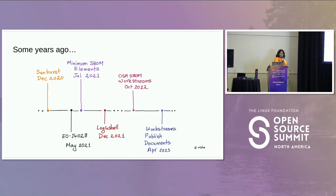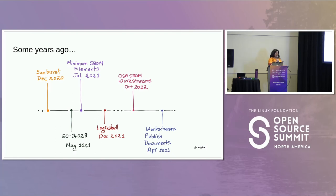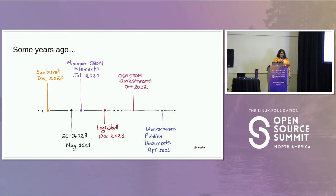Story time. Some years ago — 2021 was not a good year for software supply chain security. In December 2020 there was the Sunburst attack, which got everyone upset. Around May, anyone involved in SBOM may remember this string of letters and numbers: EO14028 — that's when the US government released their executive order saying all suppliers have to give them an SBOM.